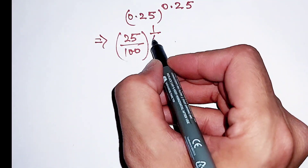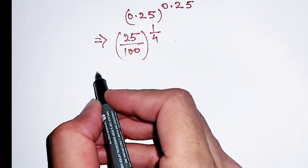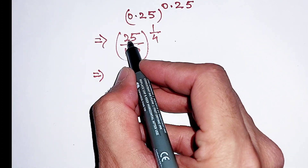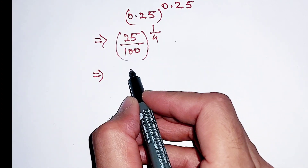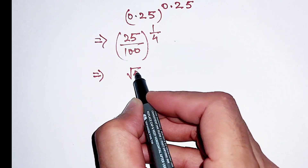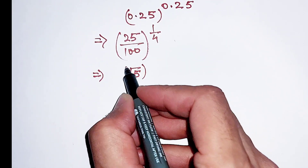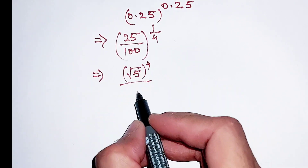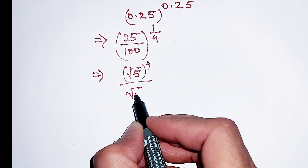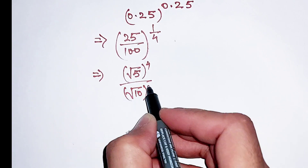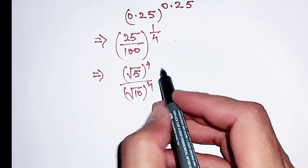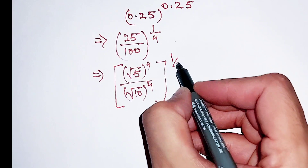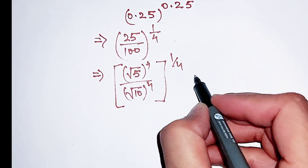Now this 25 can be written as square root of 5 to the power 4, and this 100 can be written as square root of 10 to the power 4, and the whole power is 1 divided by 4.